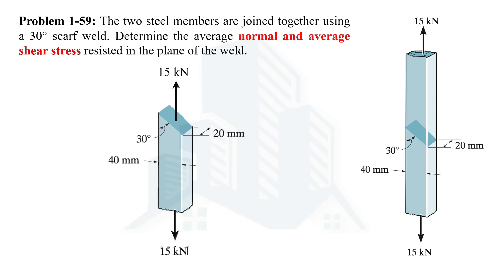Since we have been asked to determine the normal and shear stress on this weld, we can resolve this 15 kilonewton force into its components — the one parallel to the plane will be the shear component, and the one perpendicular to the plane will be the normal component. The component parallel to the plane of the weld will help us determine the shear stress, and the component perpendicular to the plane will help us determine the average normal stress.